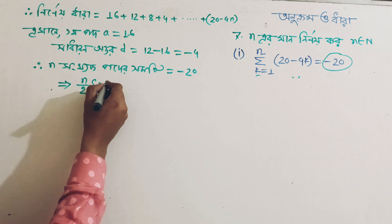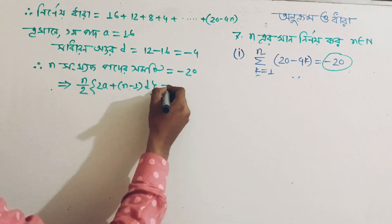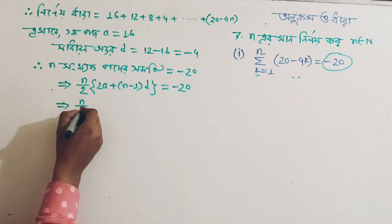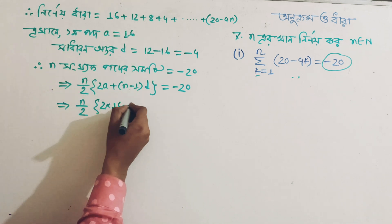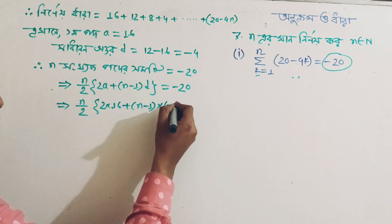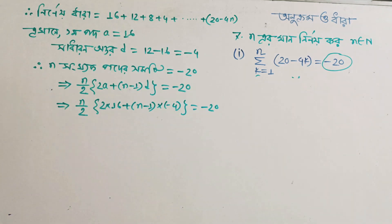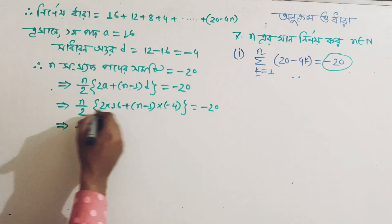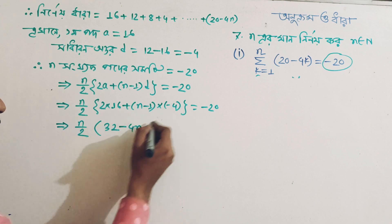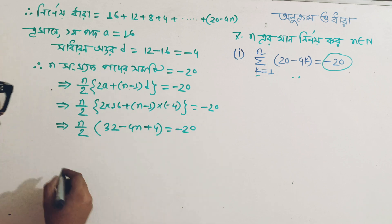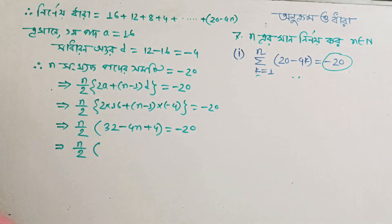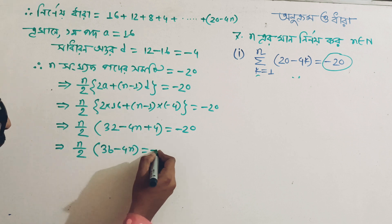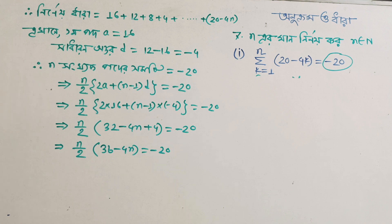Using the formula: n divided by 2, second bracket, twice a plus n minus 1 into d, is equal to minus 20. So n divided by 2 is equal to 610. We write n minus 1 into d: 1 minus 4 is equal to minus 20. Then n divided by 2 gives minus 4(n - 1) + 4 equals minus 20.